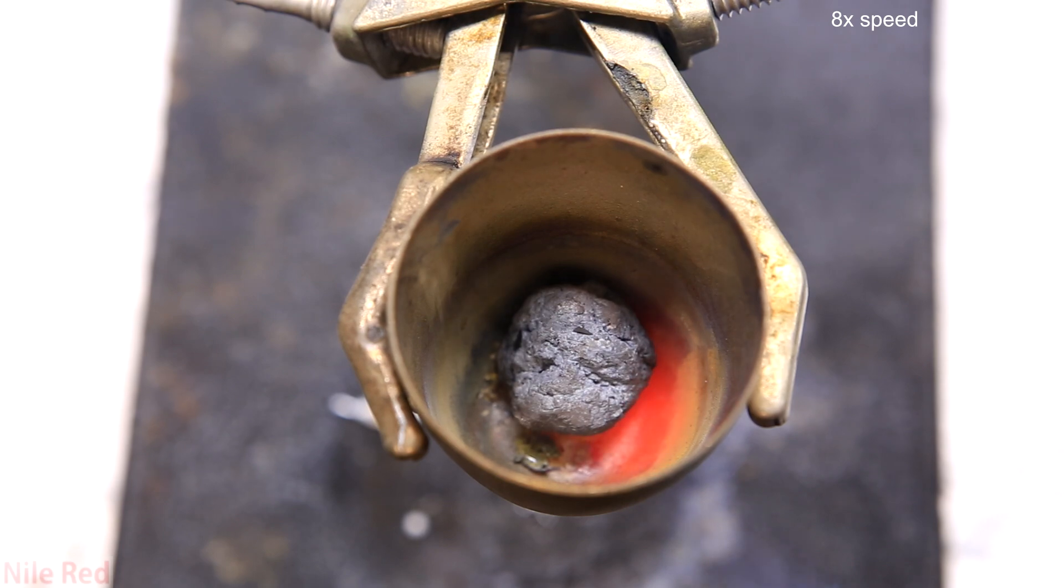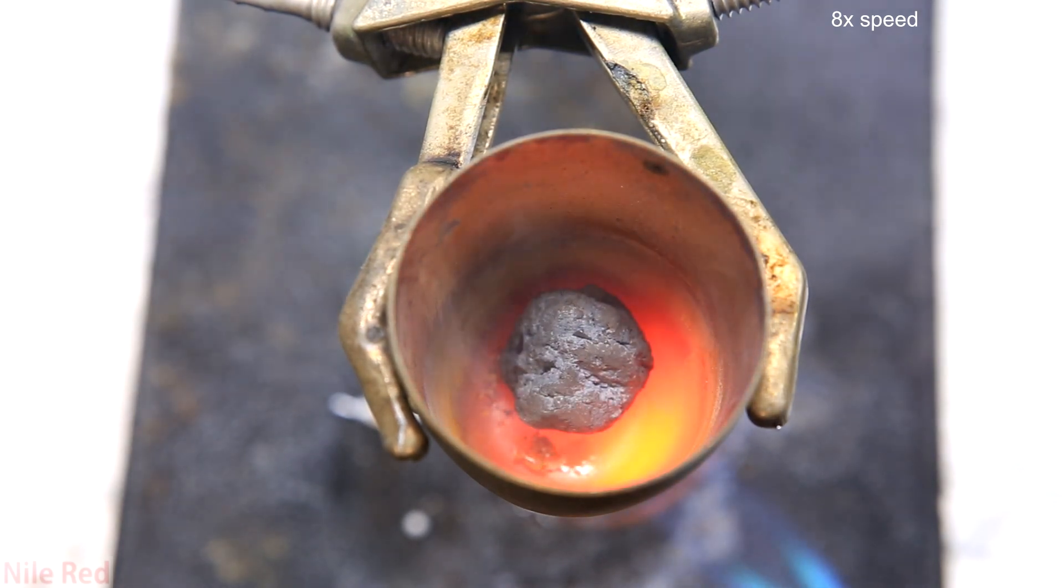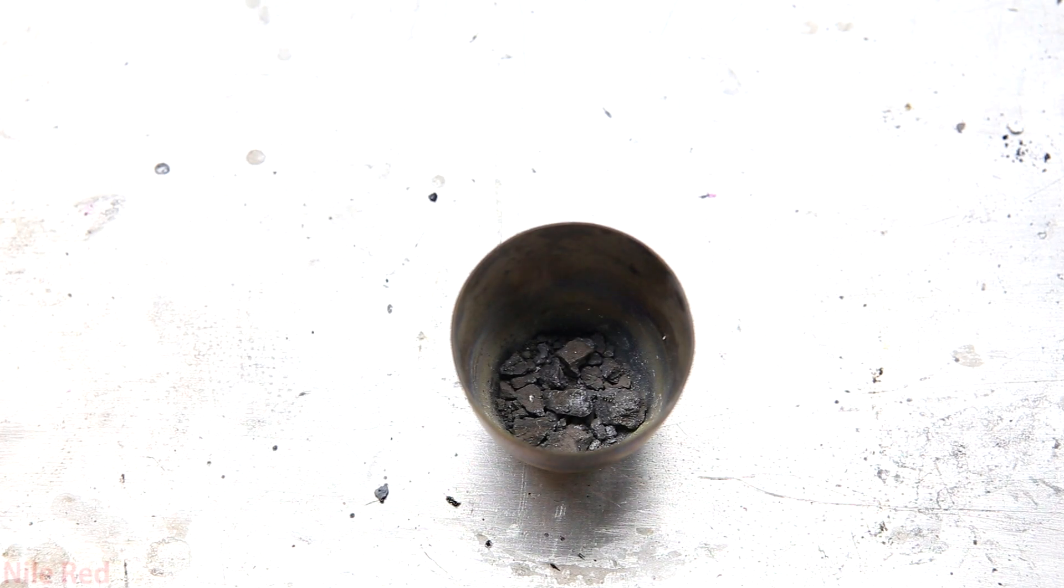The still wet ball of bismuth metal was transferred to a metal crucible and then heated using a torch to drive off the water. Once it had cooled, the ball was crushed into smaller fragments.